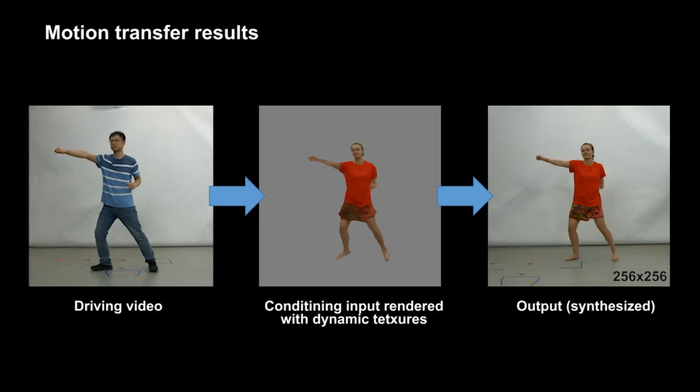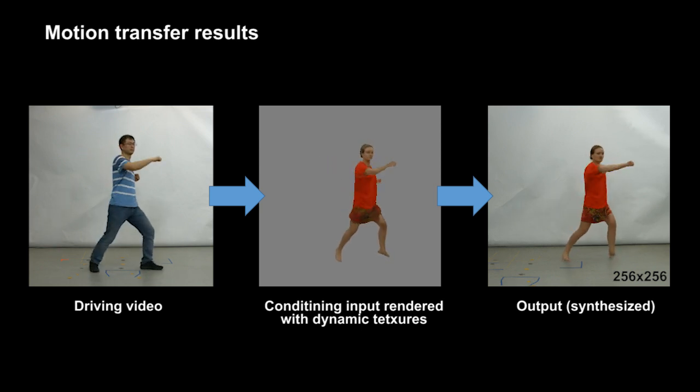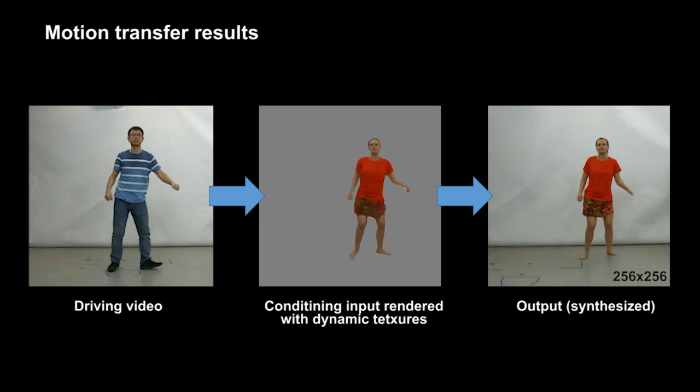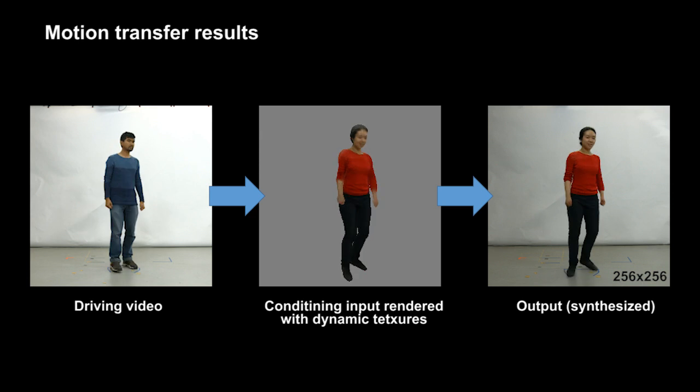Now we show more results. Note that our method can even synthesize plausible shadows, naturally blend the foreground and background, and correct geometrical errors due to incorrect tracking or skinning. Our networks successfully learn the appearance and bedding of the full body.